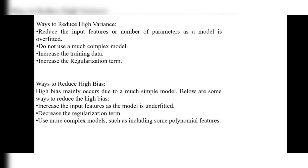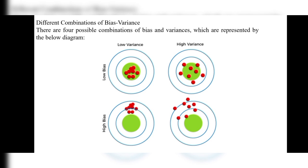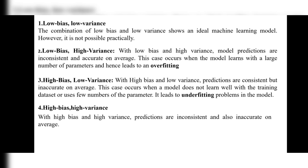There are four possible combinations of bias and variance. These are represented in a diagram: low bias–low variance, low bias–high variance, high bias–low variance, and high bias–high variance. Let's see them one by one. First, low bias and low variance: this combination shows an ideal machine learning model, however it is not possible practically.